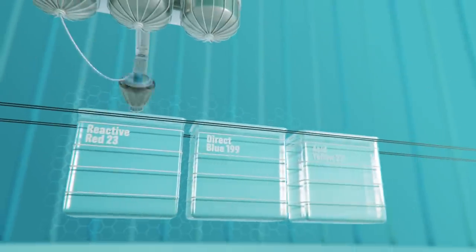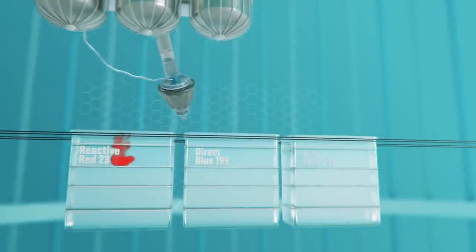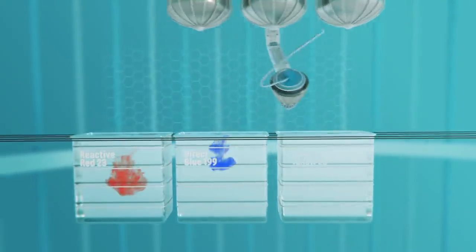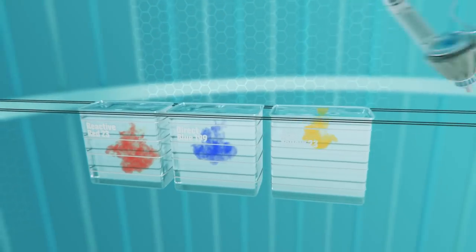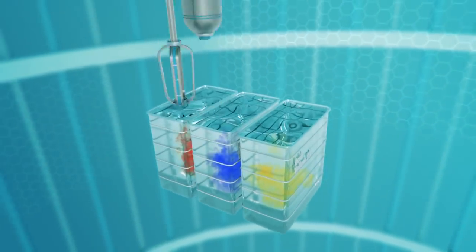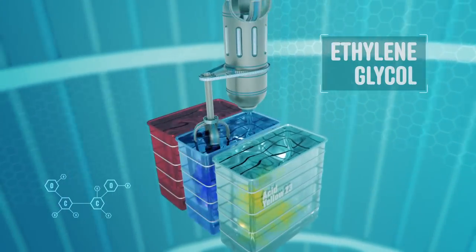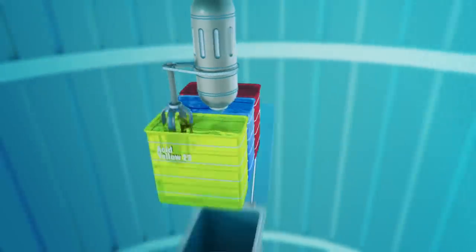The color comes from three dyes: Reactive Red 23, Direct Blue 199, and Acid Yellow 23. Each lives in its own cartridge with a little ethylene glycol—that's antifreeze—to keep it mixed with the water.